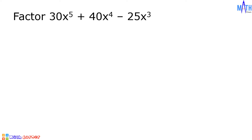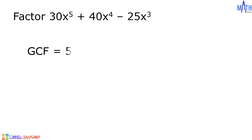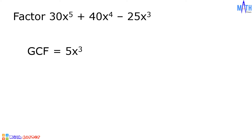Next example, let us factor 30x raised to 5 plus 40x raised to 4 minus 25x cubed. Let us determine the GCF. Between 30, 40, and negative 25, the GCF is equal to 5. Between x raised to 5, x raised to 4, and x cubed, the GCF is x cubed. And the greatest common factor is equal to 5x cubed.